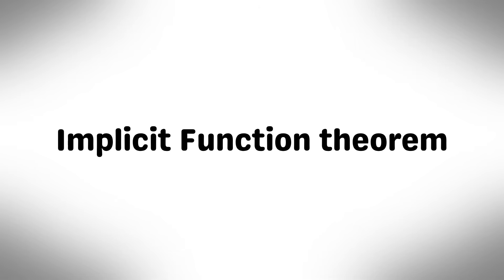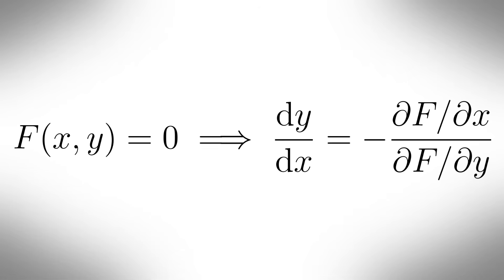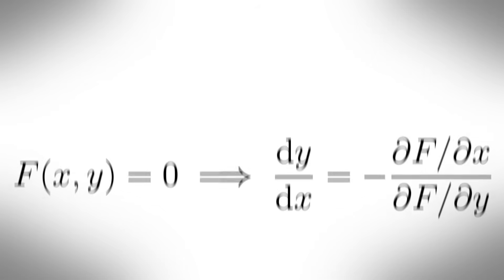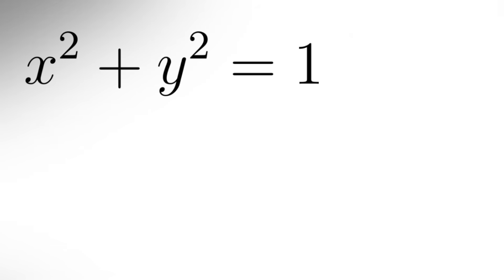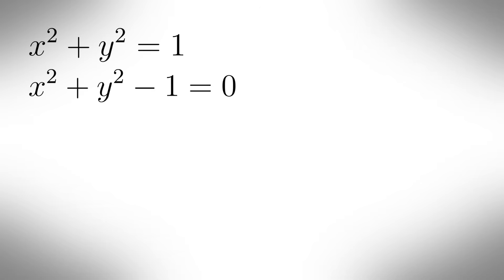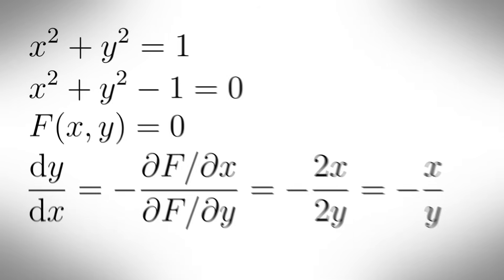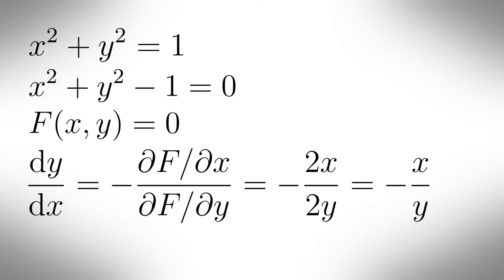Implicit Function Theorem. This theorem states that if a function of two variables f of x and y equals 0, then dy/dx equals minus the partial derivative of f with respect to x over the partial derivative of f with respect to y. For example, let's say we have a function x squared plus y squared equals 1. Now, to differentiate this, we could use implicit differentiation and rearrange to get minus x over y. But that's wrong and you're stupid for even thinking that. If you just rearrange the equation to make it equal to 0, now we have a function of two variables x and y equal to 0. So we can just use the Implicit Function Theorem to get the derivative of minus x over y.